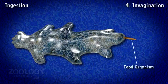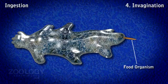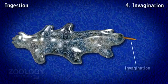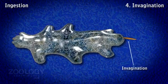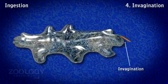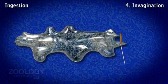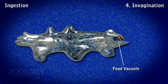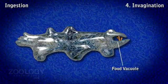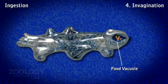4. Invagination: In this method, the food is struck by the toxic secretion of the ectoplasm. The food organism is sucked in with contact of ectoplasm by the formation of an ectoplasmic tube. This tube upon engulfment takes the form of a food vacuole.